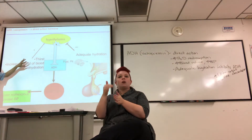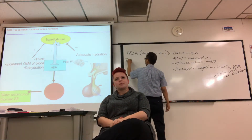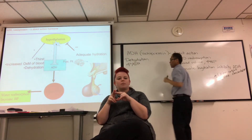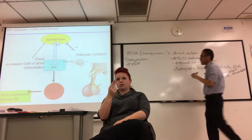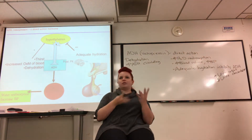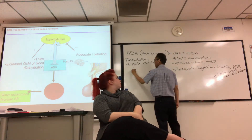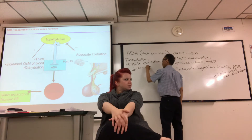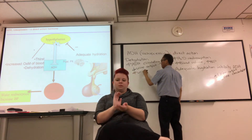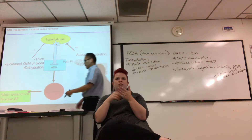If you're dehydrated or thirsty, that kicks ADH on — you increase ADH circulating in the bloodstream. The result is decreased urine output and more concentrated urine. We'll talk more about urine concentration when we actually get to the kidney, but for now I want to move on.